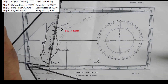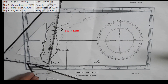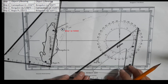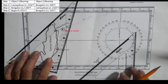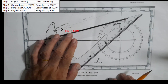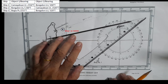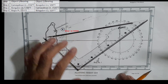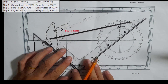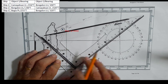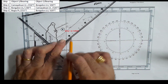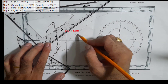Bungalun bears 230°. So Bungalun bears 230. Right here, 230. Bring that line to Bungalun. Now you have your LOP — LOP of Ship 2, Bungalun, 230.